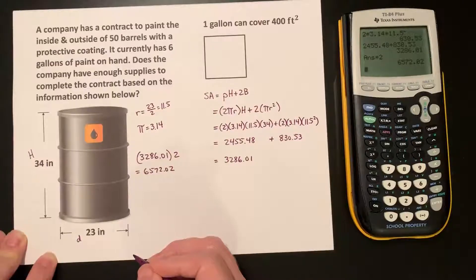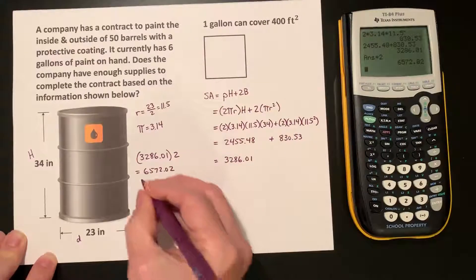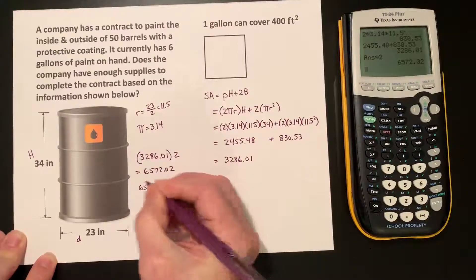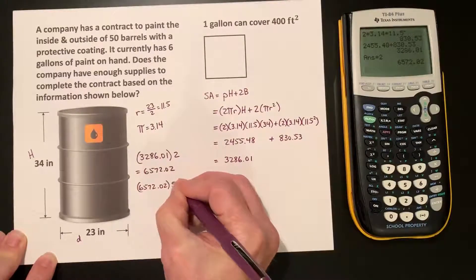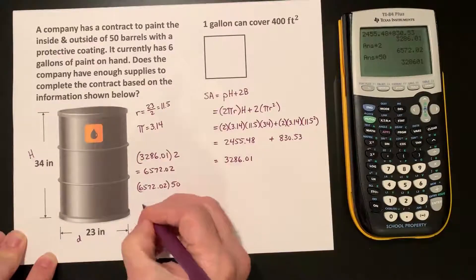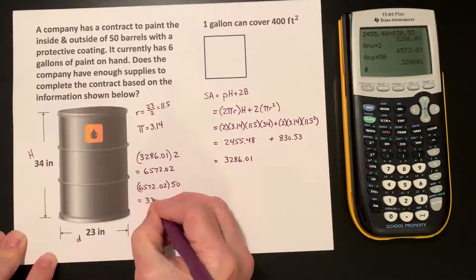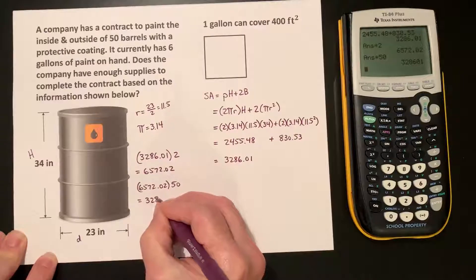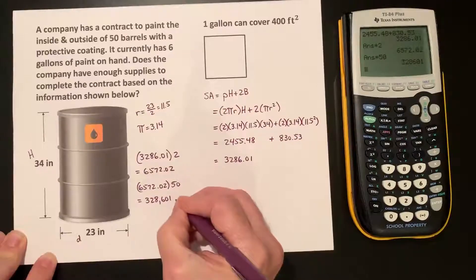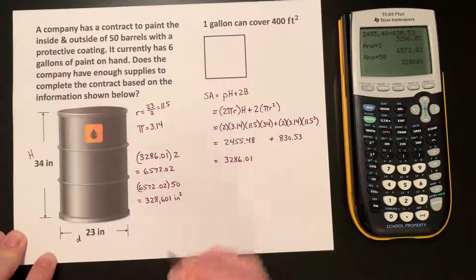But we have 50 barrels, so this amount times 50, 6,572.02 times 50, is going to give us 328,601 inches squared.